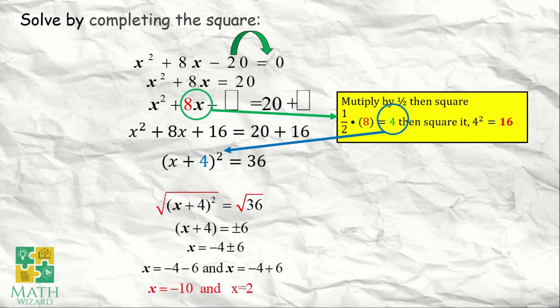So, x is equal to negative 4 plus or minus 6. Minum natin si 4 sa right side ng equation. This can be written as: x is equal to negative 4 minus 6, or x is equal to negative 10. And then, sa kabila naman, x is equal to negative 4 plus 6, or x is equal to positive 2. That's our final answer.